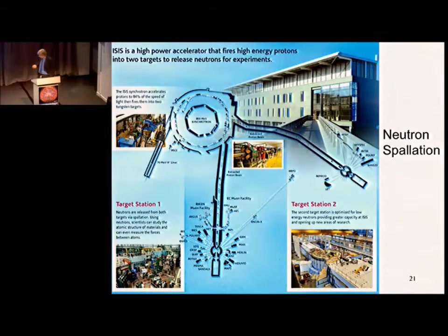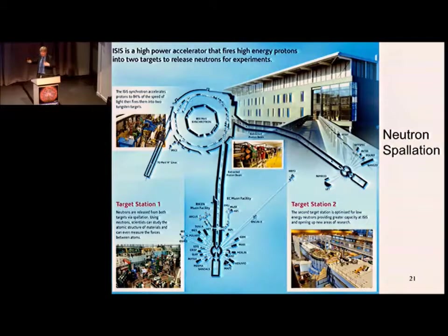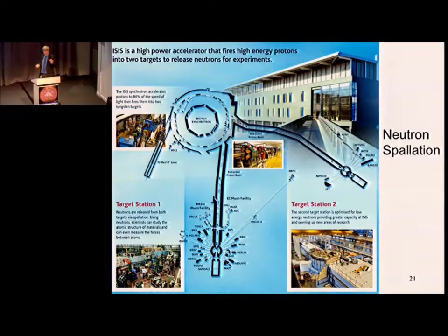Another accelerator is ISIS, a multi-component accelerator with a LINAC accelerating protons, then a synchrotron ring bringing them to 800 MeV, before firing them to one of two target stations. These are essentially lumps of metal — the proton goes in, smashes nuclei, which then produce neutrons that bubble away and are captured downstream. Because neutrons are neutral and very penetrating, they go deep inside materials and act as waves — just as photons do — allowing you to diffract and see what's going on inside matter.